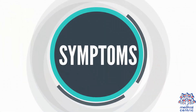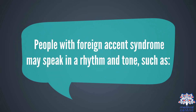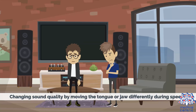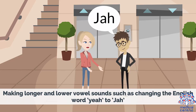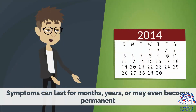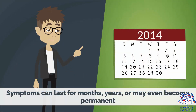People with foreign accent syndrome may speak in an altered rhythm and tone, such as changing sound quality by moving the tongue or jaw differently during speech, making longer and lower vowel sounds — for example, changing the English word 'ya' to 'ja' — and changes in rhythm and pronunciation of speech. Symptoms can last for months, years, or even become permanent.